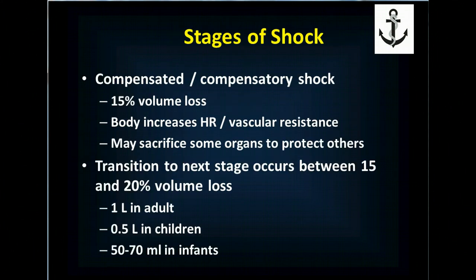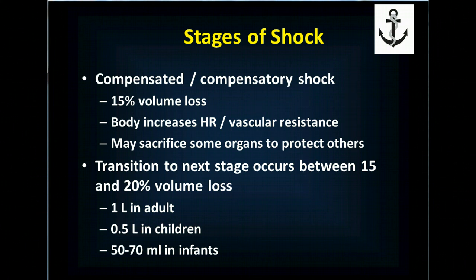Using hypovolemic shock as the model, compensated or compensatory shock occurs with approximately 15 percent volume loss — whether true volume loss or a relative increase in vascular capacity. The body responds by increasing heart rate and squeezing down blood vessels to increase vascular resistance. You'll see a slight increase in heart rate and decreased blood flow to non-vital organs like skin, muscles, and hands — sacrificing some organs to protect others. This can actually be adaptive if peripheral vasoconstriction allows clotting at an injured site.